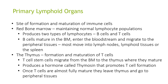Looking at primary lymphoid organs, this is the site of formation and maturation of immune cells. The red bone marrow is involved in maintaining normal lymphocyte production. It produces two types of lymphocytes: B cells and T cells. B cells mature in the bone marrow, enter the bloodstream, and migrate to the peripheral tissues. Most move into the lymph nodes, lymphoid tissues, or the spleen.